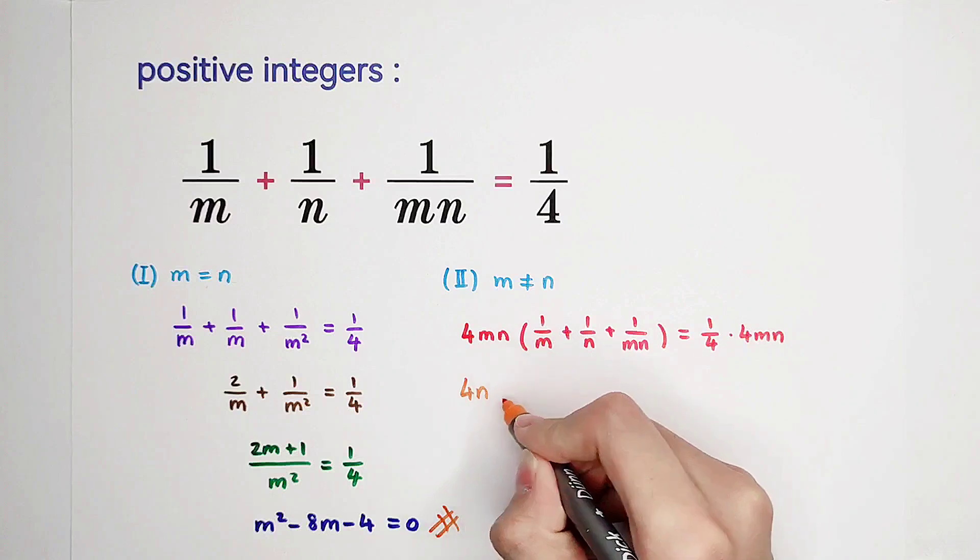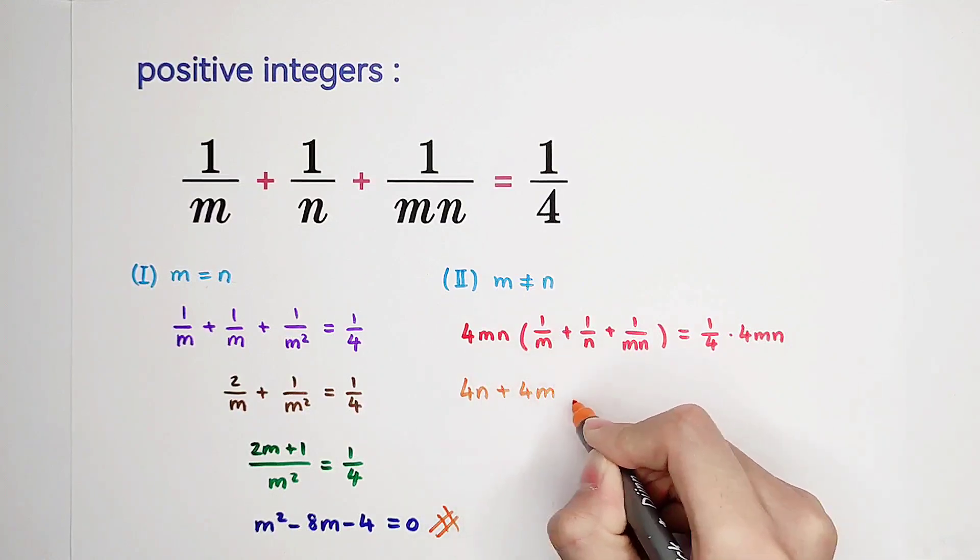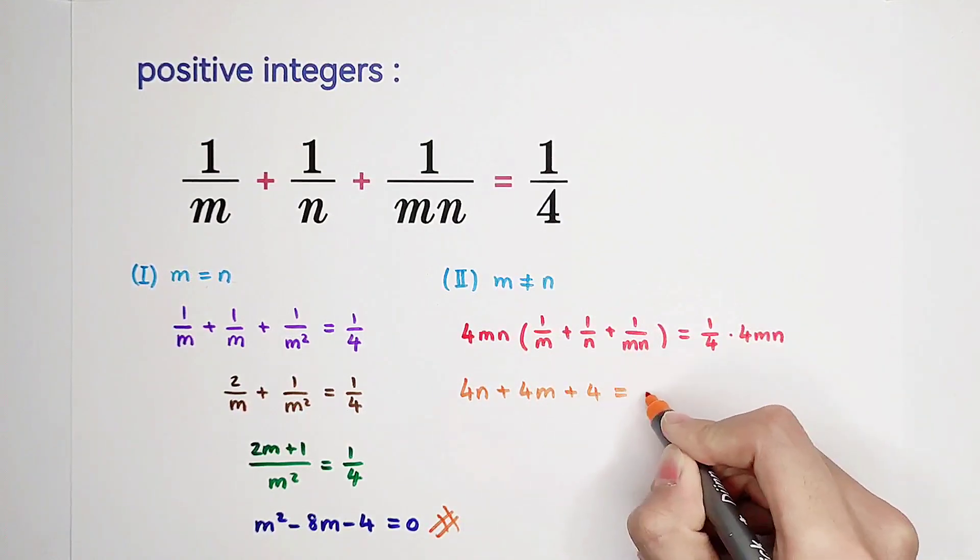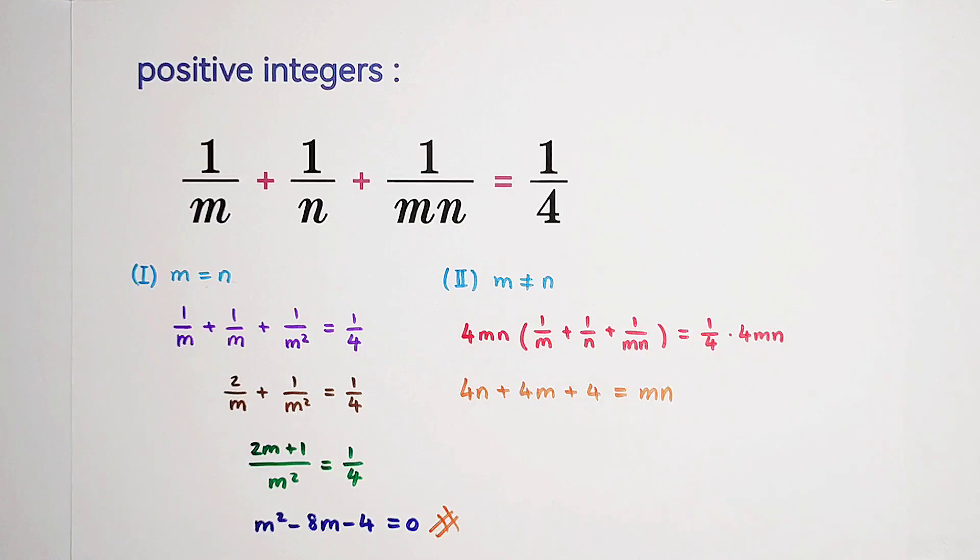And then the equation will be like this. Here is 4n. Here is 4m. Here is 4. Here is m times n. Now, I like to subtract 4n and 4m from both sides. It is mn minus 4m minus 4n equals 4.